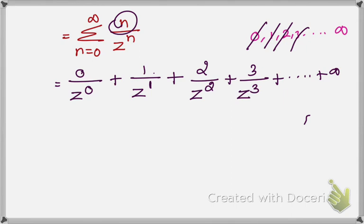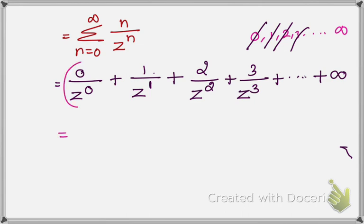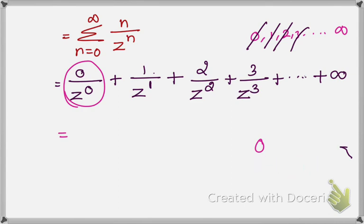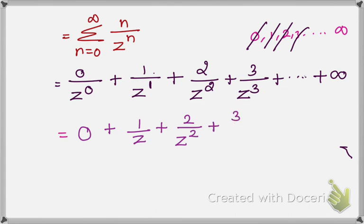So putting n values 0, 1, 2 up to infinity: the first term 0 over Z to the power 0 equals 0, since 0 divided by anything is 0. So the first term vanishes. The remaining terms are: 1 over Z, plus 2 over Z square, plus 3 over Z cube, plus 4 over Z to the power 4, plus etc., up to infinity.